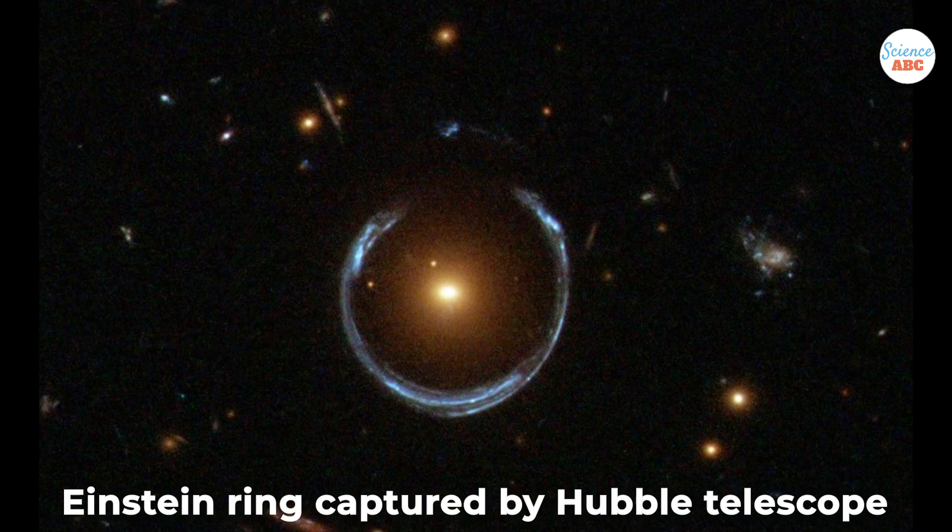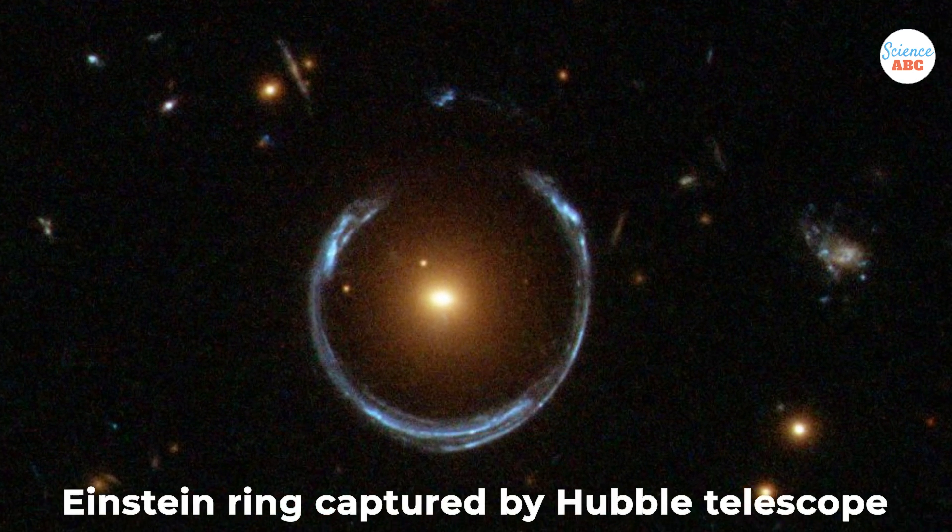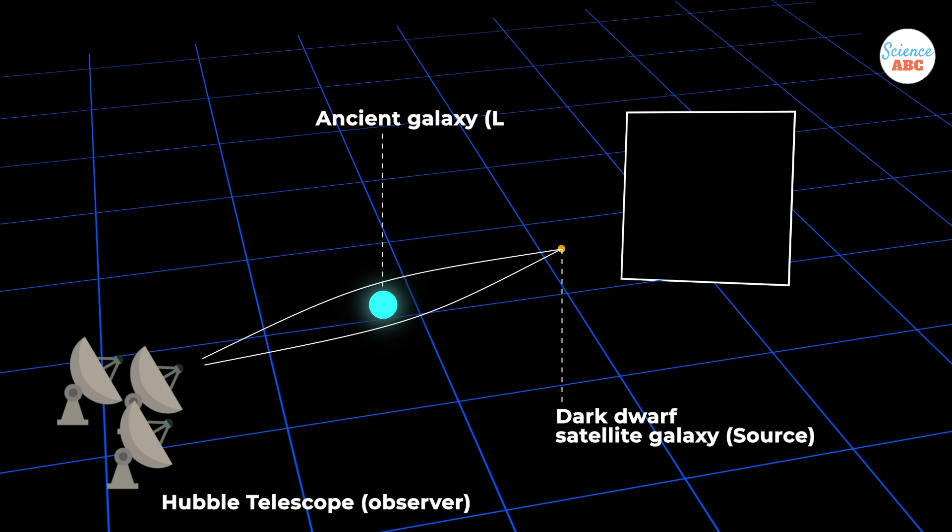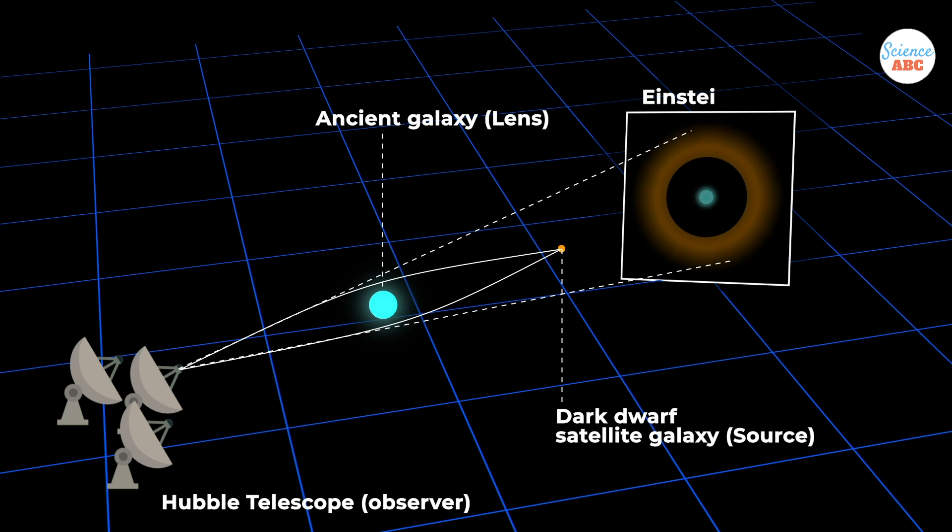An Einstein ring was first observed in 1998 through the Hubble telescope. The light in this observation was coming from a dark dwarf satellite galaxy. The light was bent equally in all directions by an ancient galaxy acting as a lens, leading to the formation of a smeared-out ring, confirming Einstein's prediction from 80 years earlier.